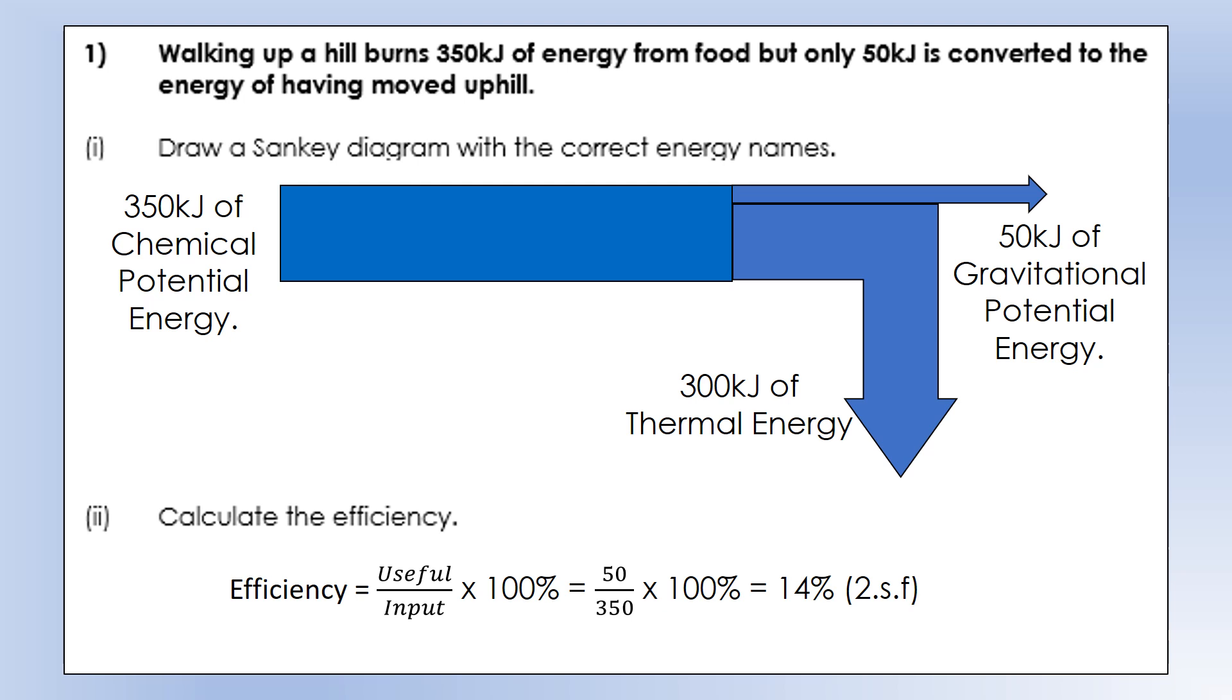I'm going to take you through a few different scenarios and we're going to work out the energy transfer, draw a Sankey diagram and efficiency for each one. We're walking up a hill, burning 350 kilojoules of energy from food, but only converting 50 kilojoules into actually moving uphill.